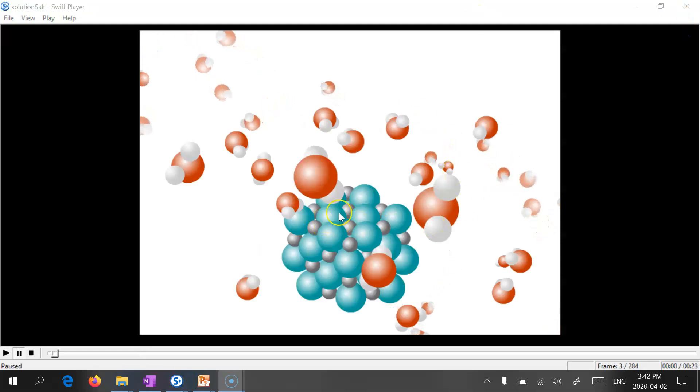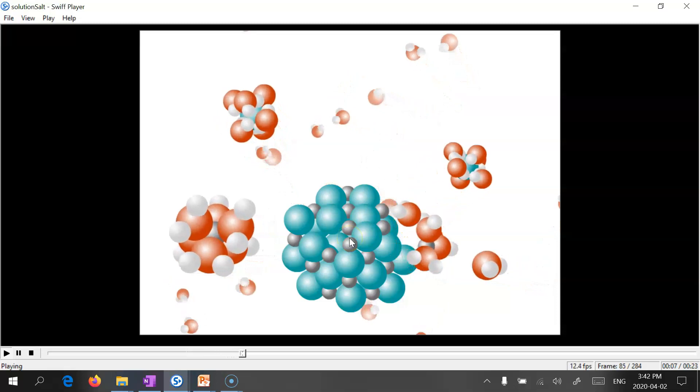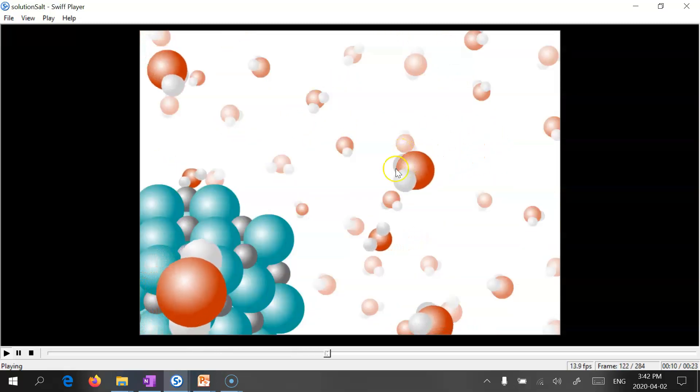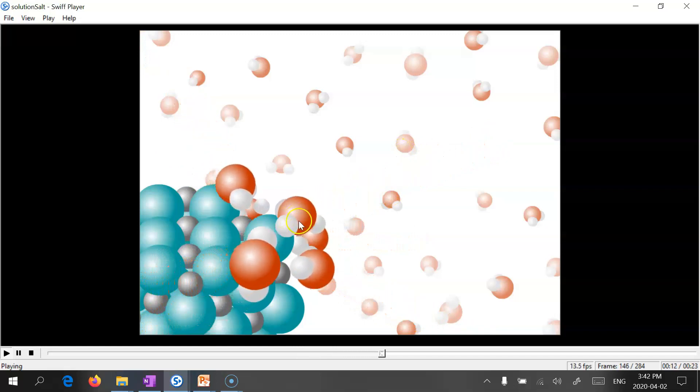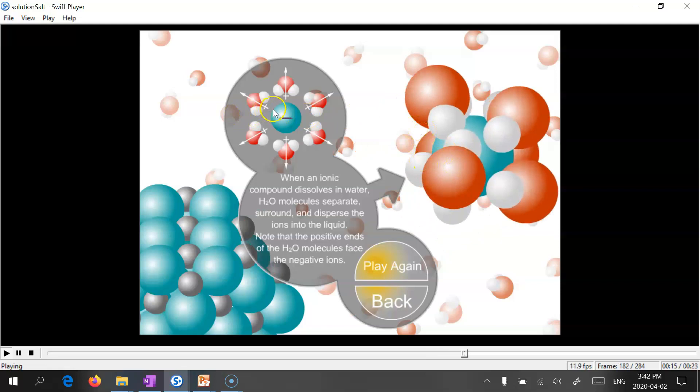And so when we dissolve salt in water, this is what happens. The water molecules come in and pull the ionic compound apart. They dissociate it, ion by ion. If we take a closer look, you'll notice the partially positive end of the hydrogen grabs onto the chlorine anion, which is negative. Opposite charges attract—the partial positive end of the dipole attracts the negative anion and pulls it apart.